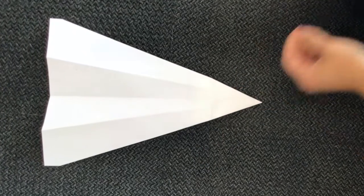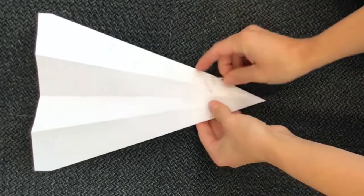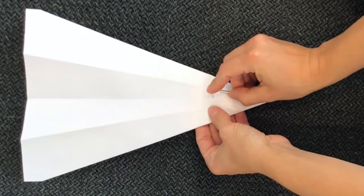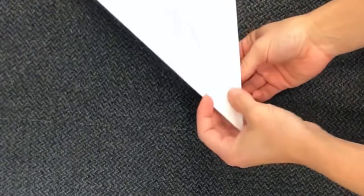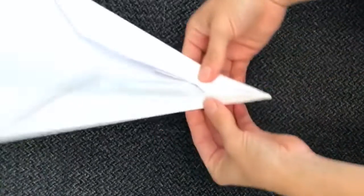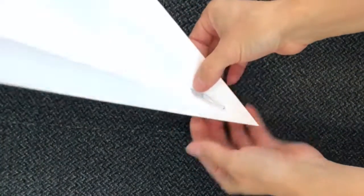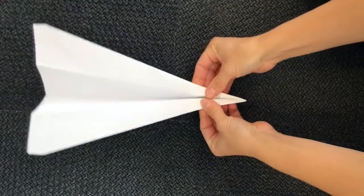And we're gonna bend our paper clip out. And stick that right where the fold is. So it sticks out the other side. And then we're gonna tape that.